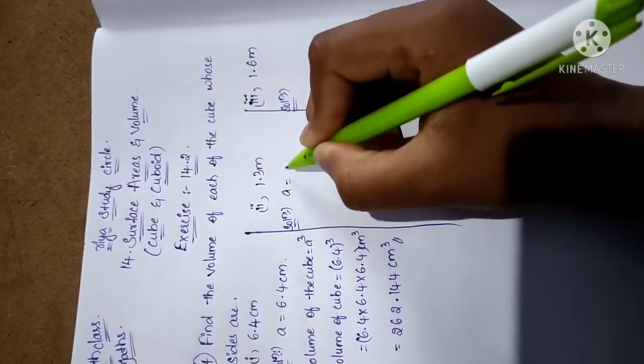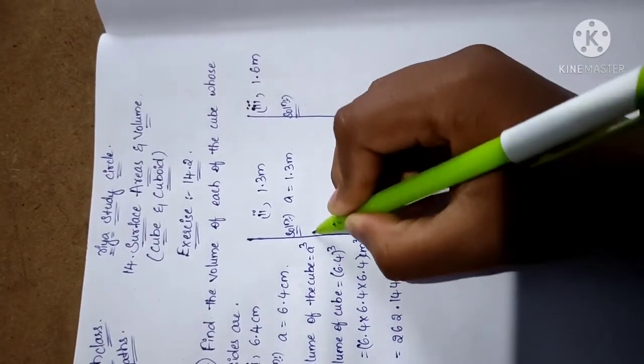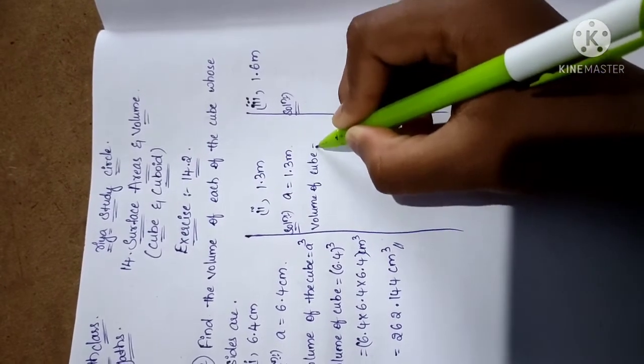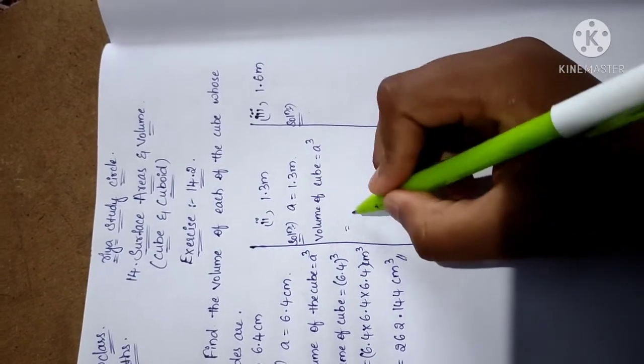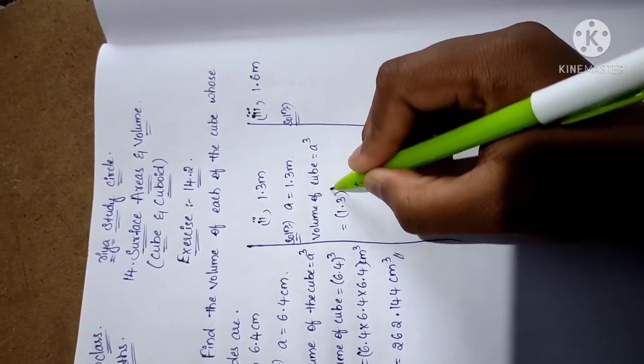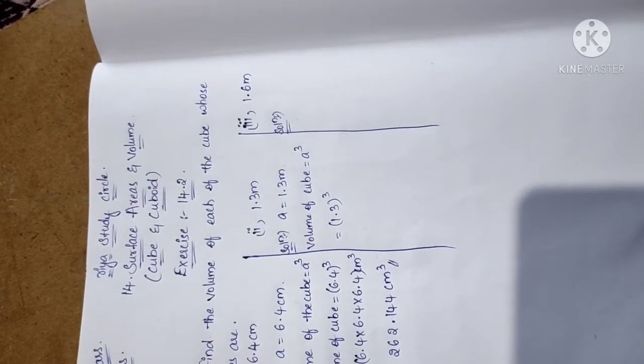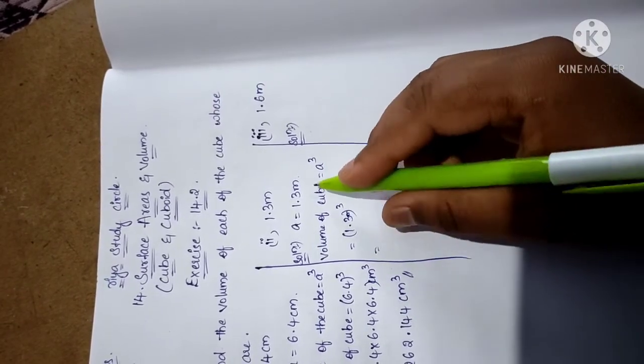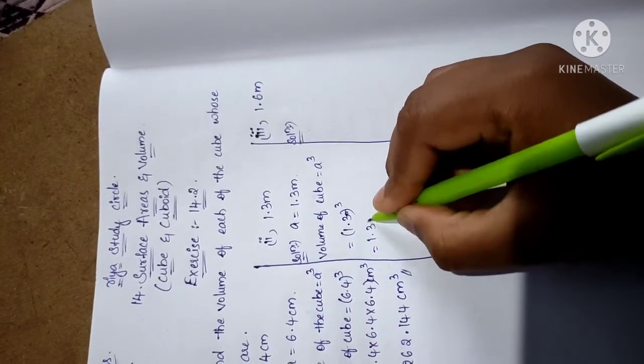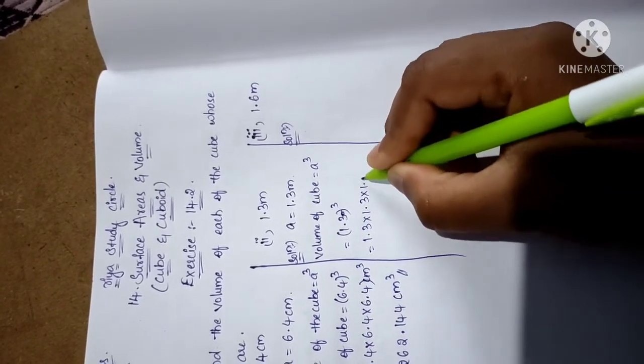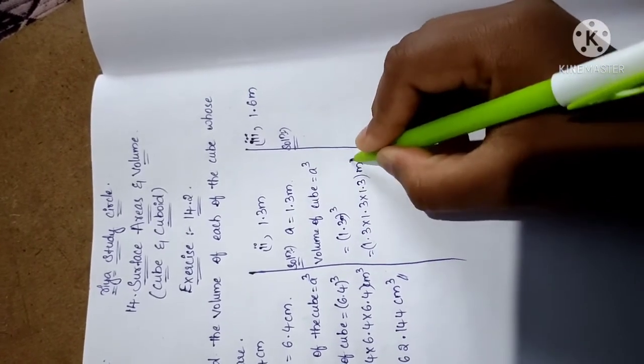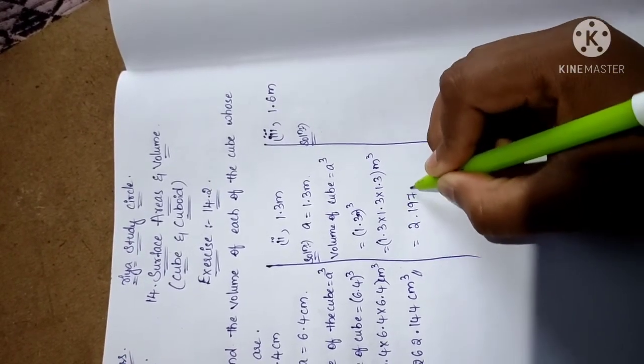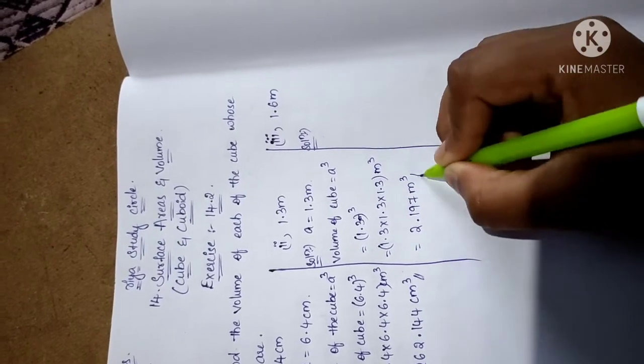Volume of the cube equals a³, that means 1.3³. Here the units are meters, so when we apply the cube, the units become m³. So 1.3 × 1.3 × 1.3 m³. The multiplication of these three terms is 2.197 m³. This is the solution for this problem.